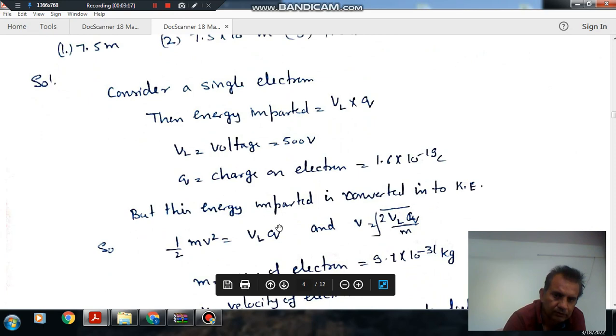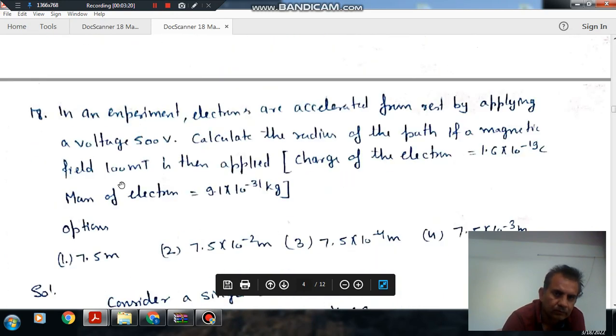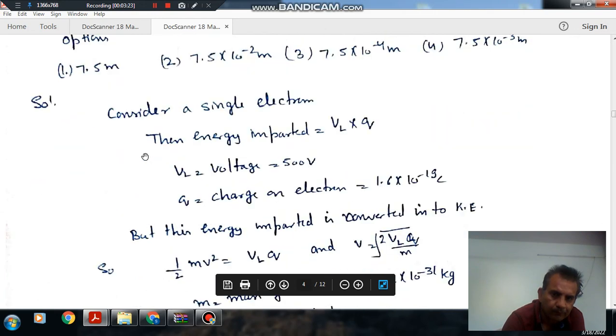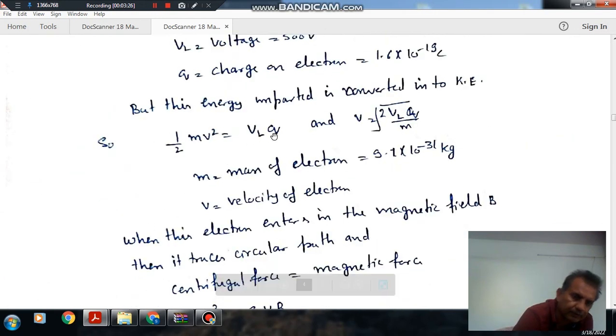The energy imparted is voltage times Q. Voltage is the potential per unit charge, so the energy imparted is V×Q. Voltage is given as 500 and charge on the electron is 1.6×10^-19. This energy imparted is converted into kinetic energy.